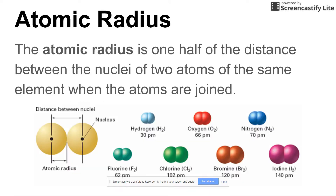We're going to start with atomic radius, so let's define it. Atomic radius is defined as one half the distance between the nuclei of two atoms of the same element when they are joined. Down here you have a diagram showing the same element — denoted by color — and the total distance between the nuclei. One half of that is called the atomic radius.